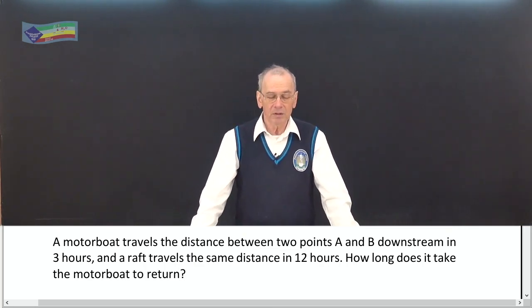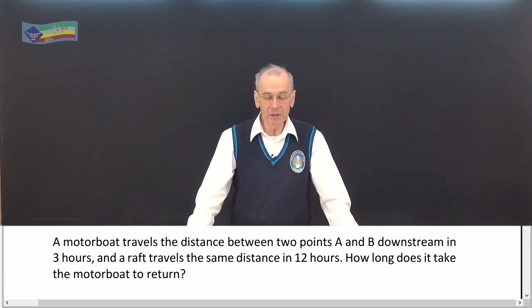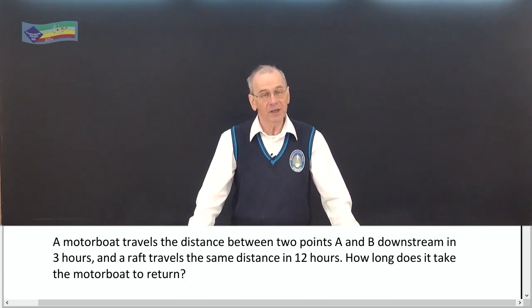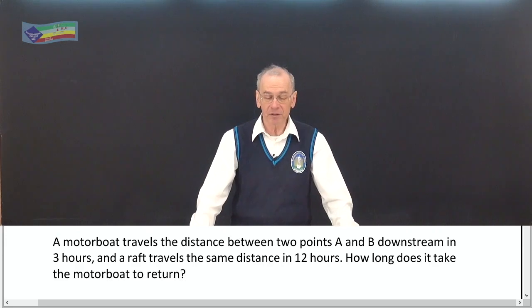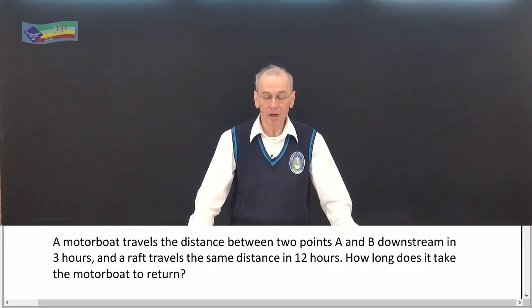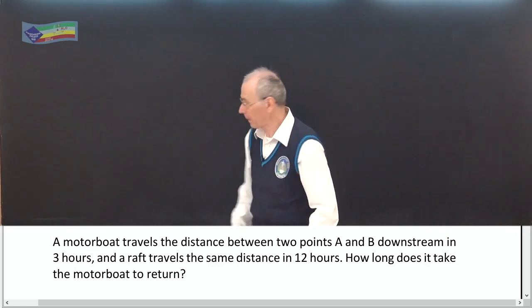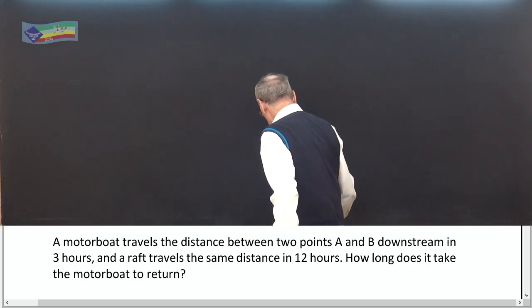A motorboat travels the distance between two points A and B downstream in three hours, and a raft travels the same distance in 12 hours. How long does it take the motorboat to return?